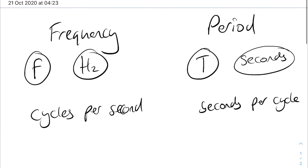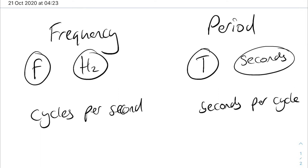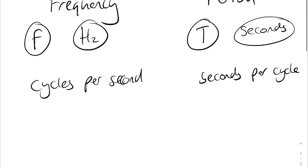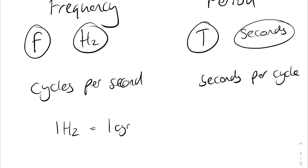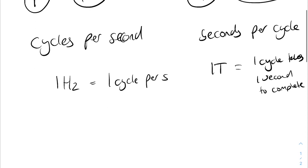As you can see, they are closely related and there's a very simple way of converting between the two. Before we go into that, let's get a bit more understanding of what these mean. If we have a frequency of one hertz, that means one cycle per second. And one T means that one cycle takes one second to complete. So with hertz you get one cycle per second, and with the period that one cycle takes a whole second to complete.